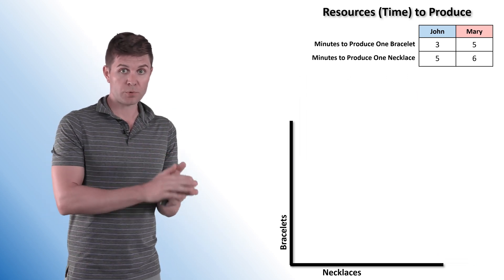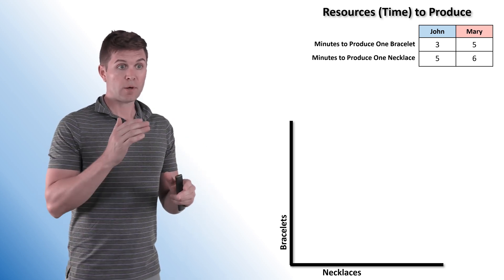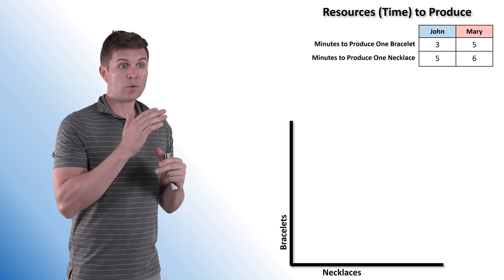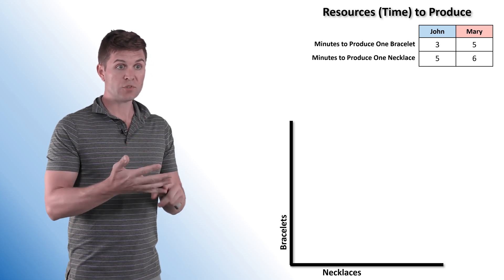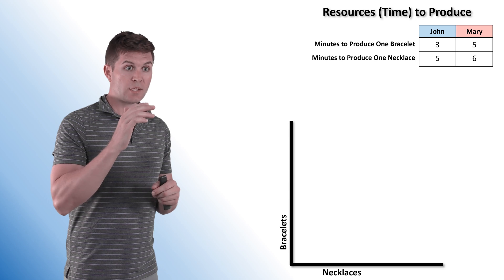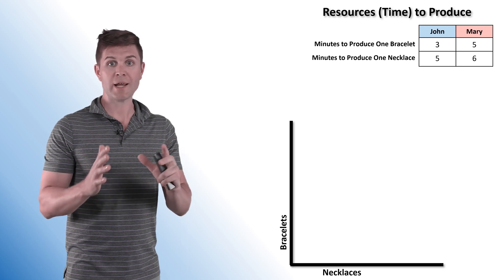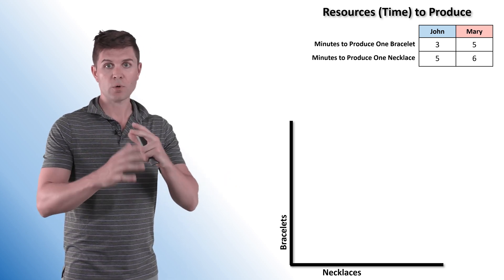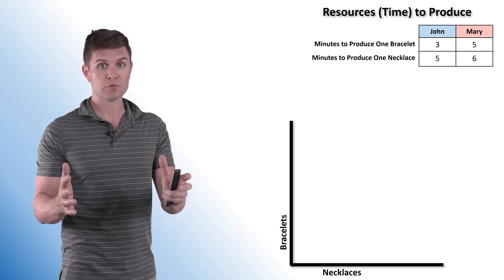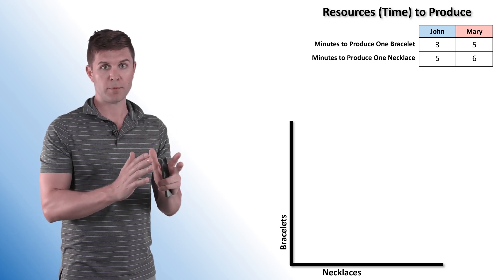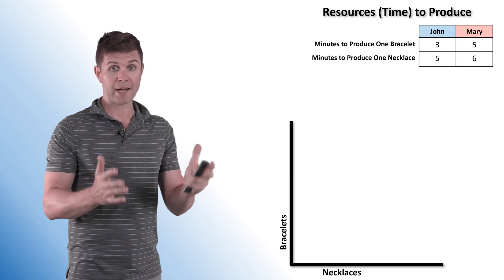When it comes to resources to produce, this is a little more tricky to actually graph. In this case, we've got John and Mary again producing bracelets and necklaces, and we are given the number of minutes it takes them to produce one unit. It takes John three minutes to produce one bracelet and five minutes to produce one necklace. Always make sure you take a second to look at what information they're giving you. If we need to graph it, we would have to convert this over to actual production.